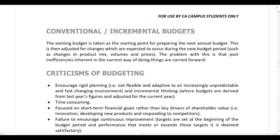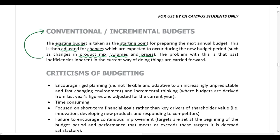Usually the budgeting process involves taking the existing budgets as the starting point for preparing the next annual budget, adjusted for changes expected to occur during the new budget period. Expected changes in product mix, volumes, and prices should be adjusted for — this is conventional or incremental budgeting. The problem with this is that just because the existing budget includes an expense doesn't mean it represents an efficient use of resources. Past inefficiencies inherent in the current way of doing things are carried forward into the future.